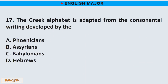Question number 17. The Greek alphabet is adapted from the consonantal writing developed by the: A. Phoenicians. B. Assyrians. C. Babylonians. D. Hebrews. The correct answer is letter A. Phoenicians.